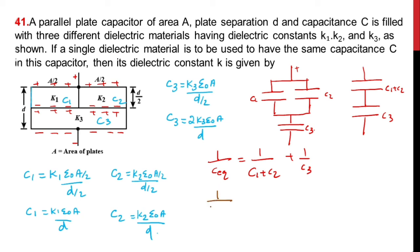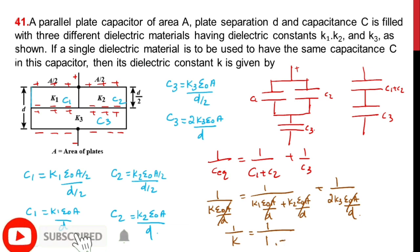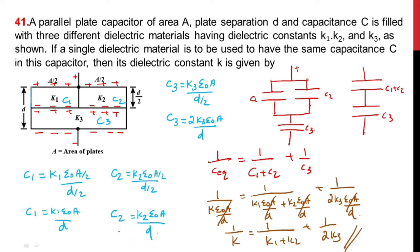Substituting the values: 1/C_eq = 1/(K1×ε₀A/D + K2×ε₀A/D) + 1/(2K3×ε₀A/D). Since C_eq = K×ε₀A/D, the ε₀A/D cancels throughout, giving the final result: 1/K = 1/(K1 + K2) + 1/(2K3). Hope you understood — thank you.